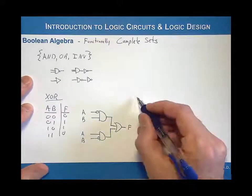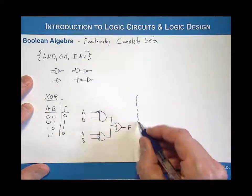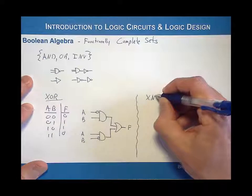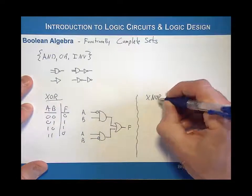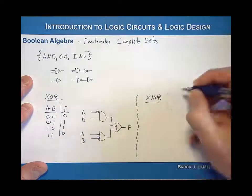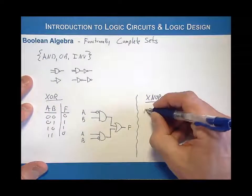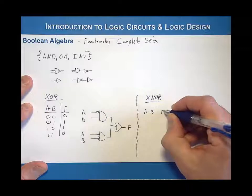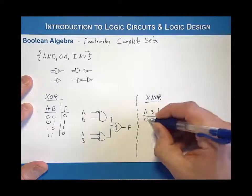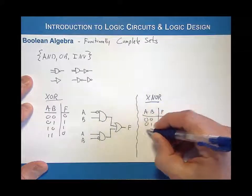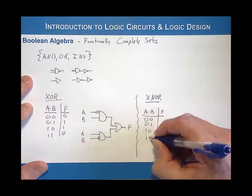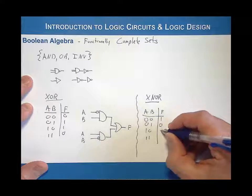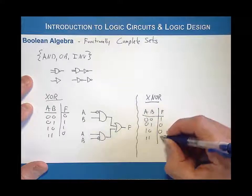What about the last one, which is an XNOR gate? An XNOR gate has input variables A and B and output F. The truth table is: inputs 0,0 → output 1; inputs 0,1 → output 0; inputs 1,0 → output 0; inputs 1,1 → output 1.